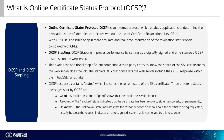The OCSP response contains a status which indicates the current state of the SSL certificate. Three different status messages are sent by OCSP. First is 'good' — a certificate status of good shows that the certificate is valid for use. Second is 'revoked' — the revoked state indicates that the certificate has been revoked either temporarily or permanently. Third is 'unknown' — the unknown status indicates that the responder doesn't know about the certificate being requested, usually because the request indicates an unrecognized issuer not served by that responder.